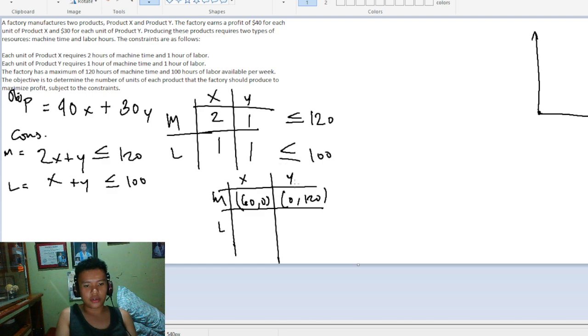For the labor hours, when x equals zero, y equals 100. So zero comma 100. When y equals zero, x equals 100. So 100 comma zero.